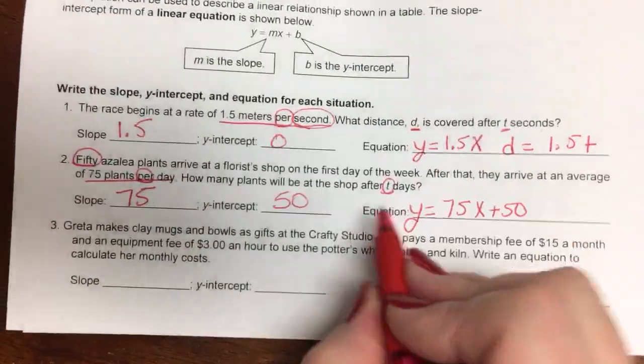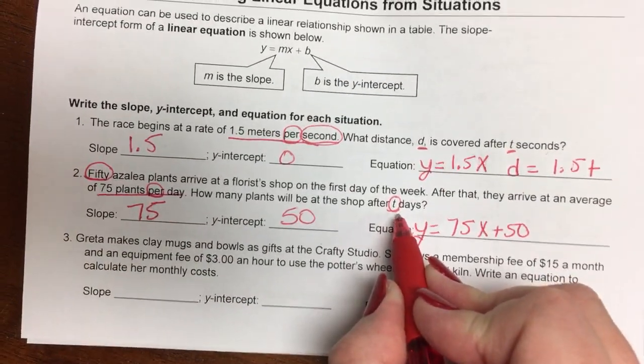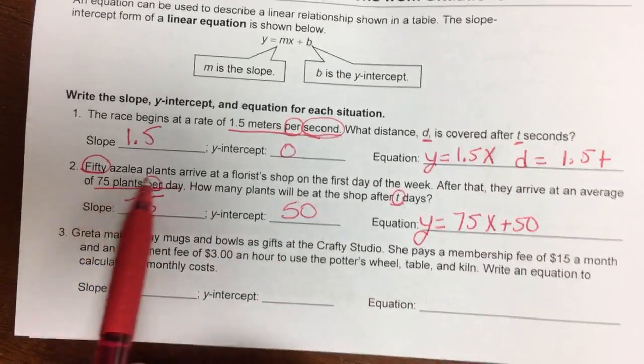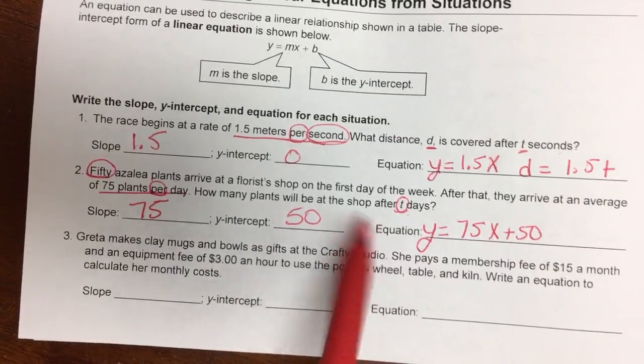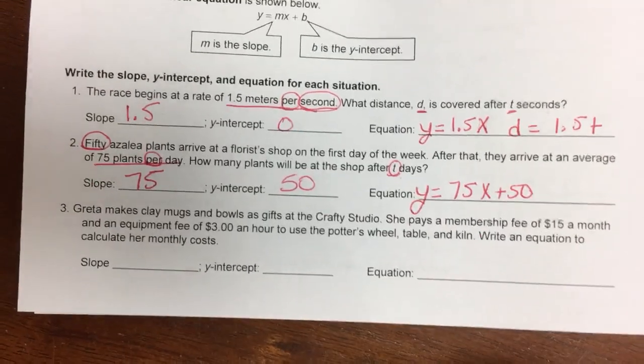But they want us to use t for days. Do they give us another variable? How many plants will be at the shop after t days? All right, so we are multiplying.